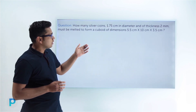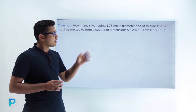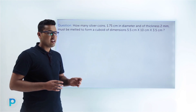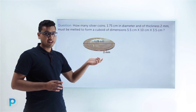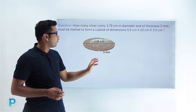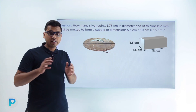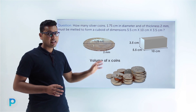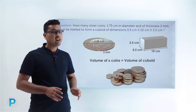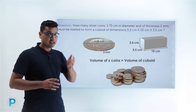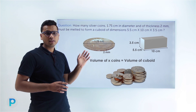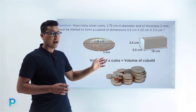Let's look at the first question: how many silver coins, 1.75 centimeters in diameter and 2 millimeters in thickness, must be melted to form a cuboid of given dimensions? We are given the coin's dimensions and asked how many such coins are required to form the cuboid. The volume of x such coins will be equal to the volume of the cuboid.